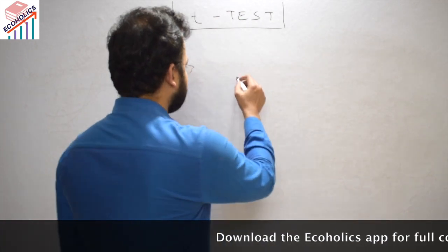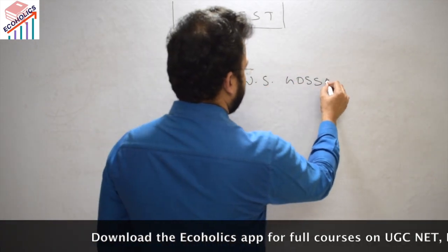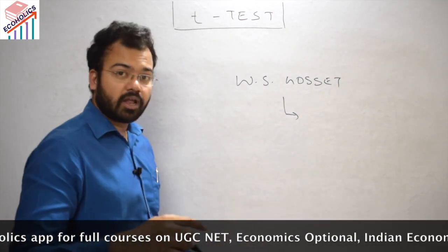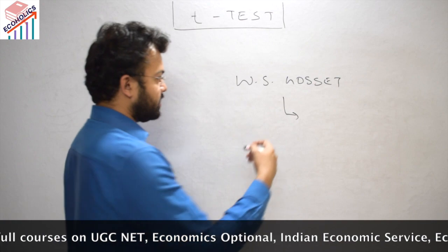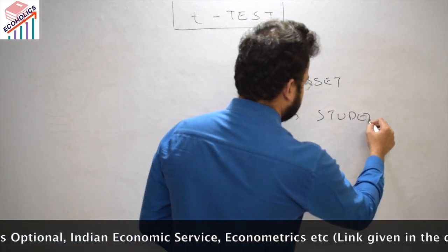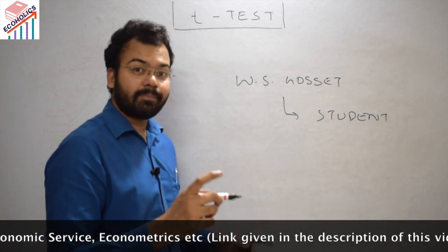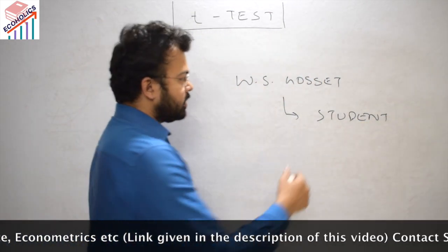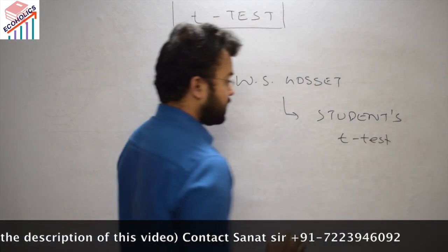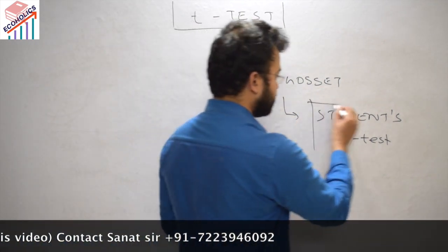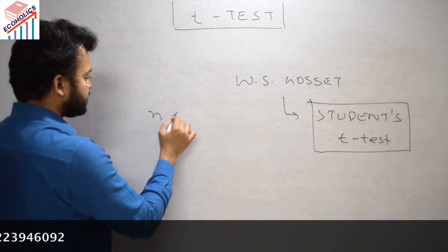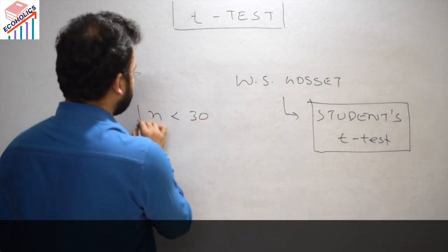This particular test was given by William Gossett. Where he was working, it was not allowed to publish research publicly, so he wrote this particular research under the name known as 'Student' — this is a pen name, meaning a writing name. This test is known as the Student t-test, or popularly known as the Student's test.